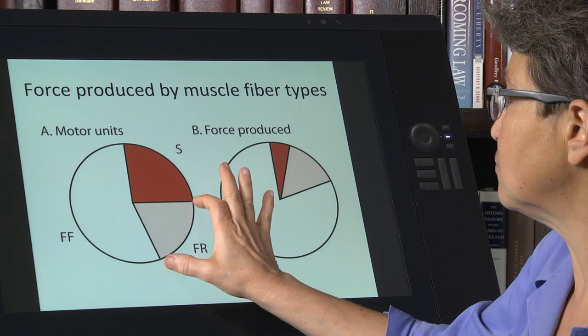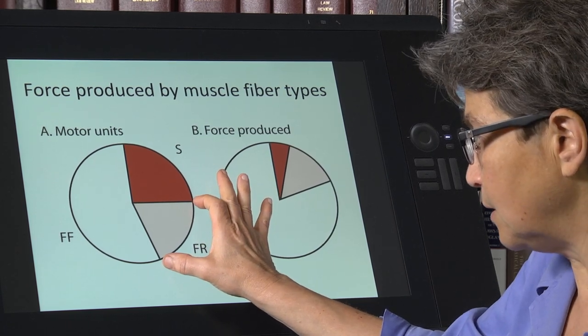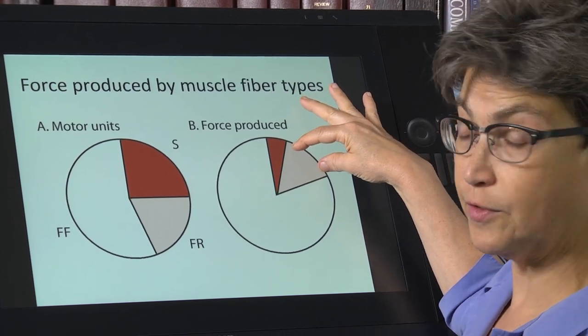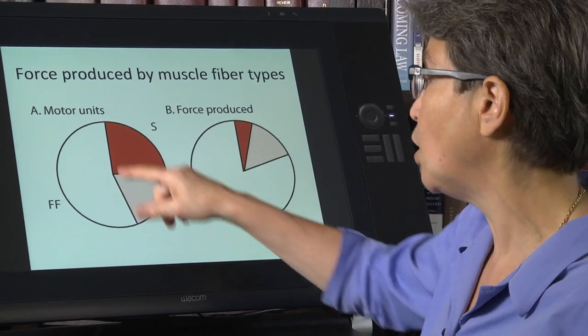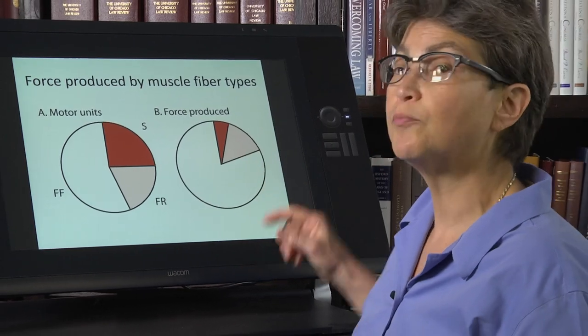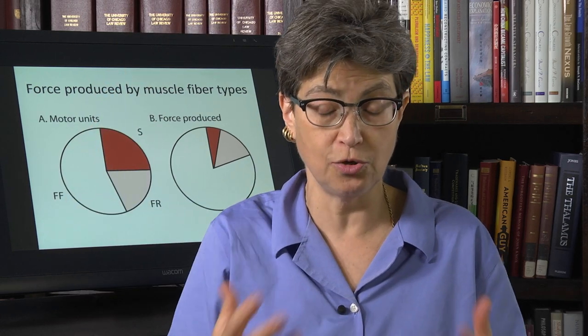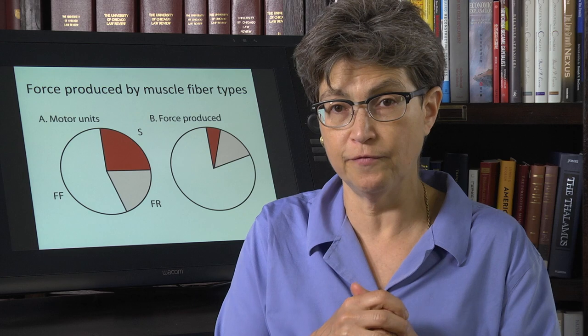And the fatigue resistant motor units will produce less force than their proportion of the total number of motor units, whereas the fast fatigables produce the bulk of the force. They have, each one of them has a big contribution to make. And so they are going to disproportionately contribute to the strength of the muscle.